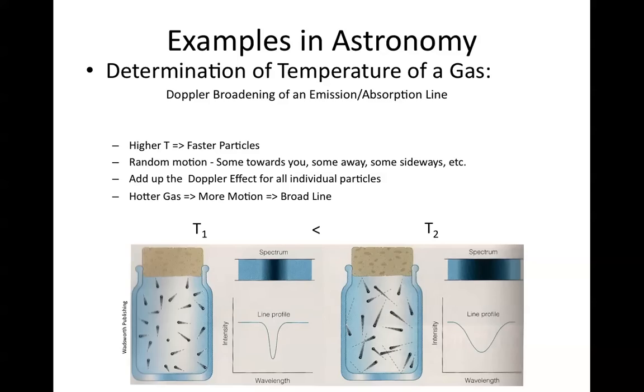Now there are other effects like rotation, for example, that we just talked about, and pressure effects that affect the shape of the line. But one of the effects that affects the shape of the line is this thermal broadening. Hotter gas means broader lines due to the Doppler effect.